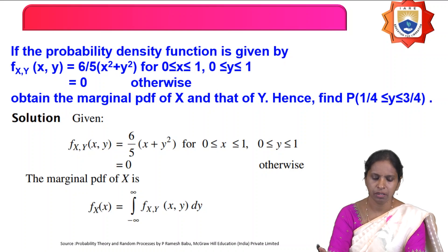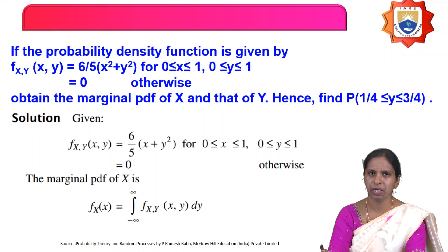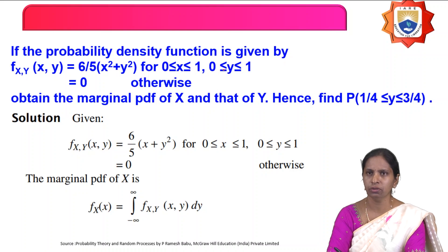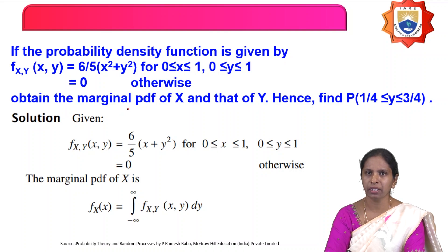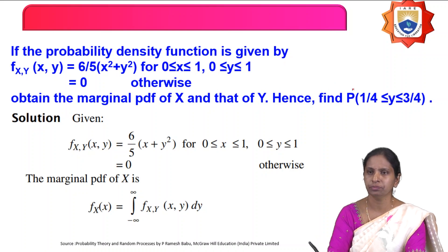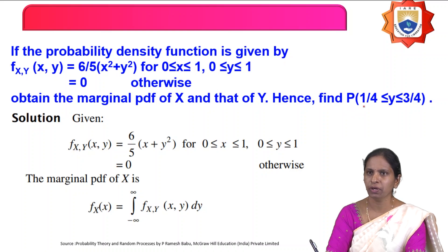The second problem: if the probability density function is given by f(x,y) = (6/5)(x² + y²) for 0 ≤ x ≤ 1 and 0 ≤ y ≤ 1, and 0 otherwise, find the marginal PDF of x and y, and hence find P(1/4 ≤ y ≤ 3/4).